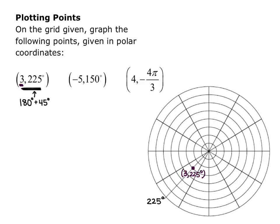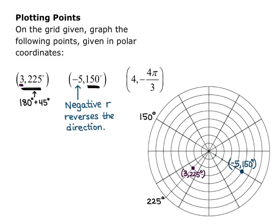The next point is (-5, 150°). We know that 150 degrees is in the second quadrant. A negative r reverses the direction we're going to go from the origin. So we have our 150-degree line, but we go in the opposite direction from the origin and count 5 in that opposite direction. So we actually end up in quadrant 4 instead of quadrant 2, with the point 5 circles out in quadrant 4 opposite the 150-degree line.